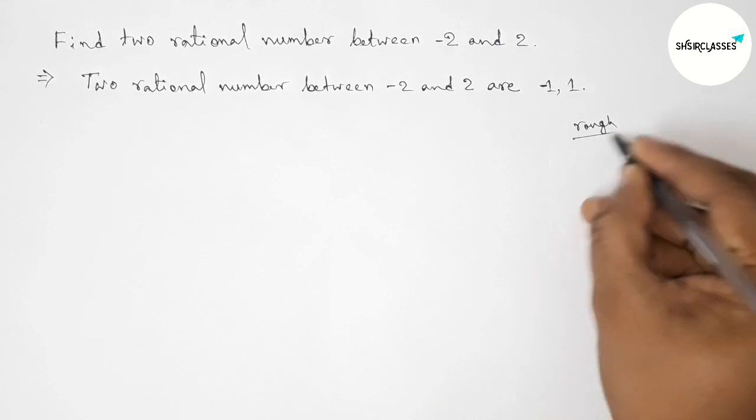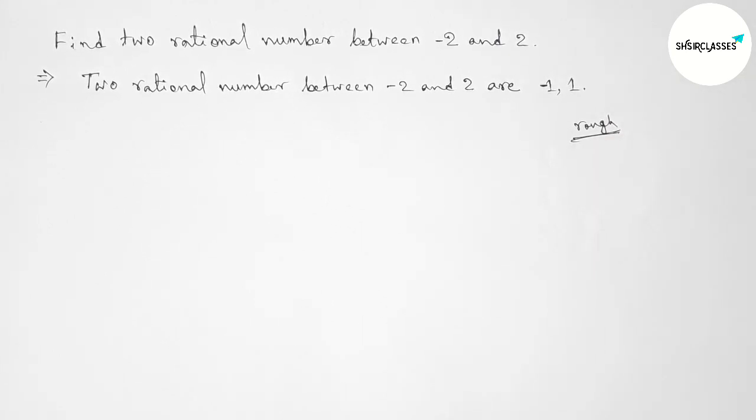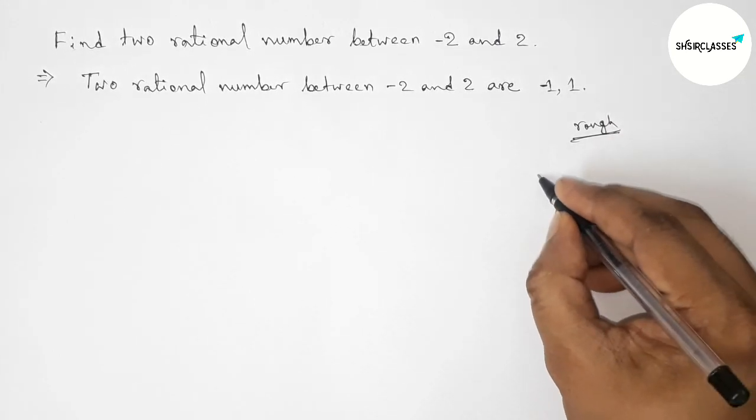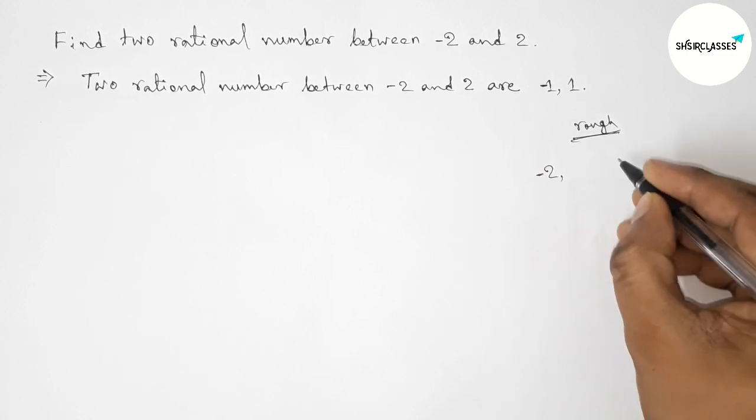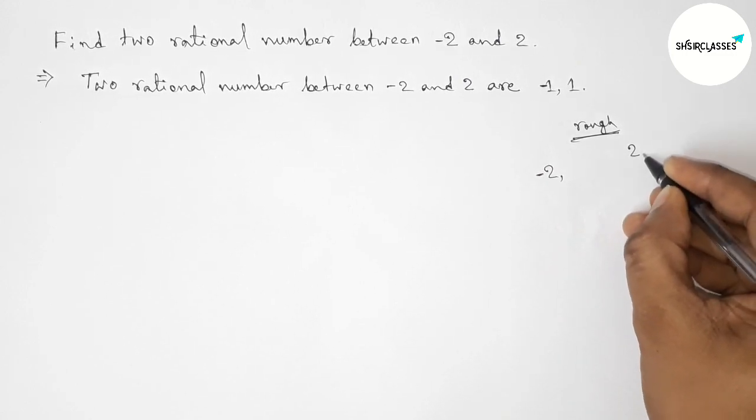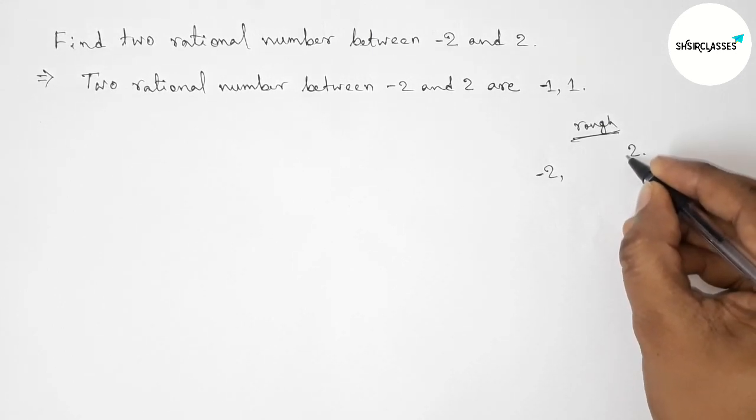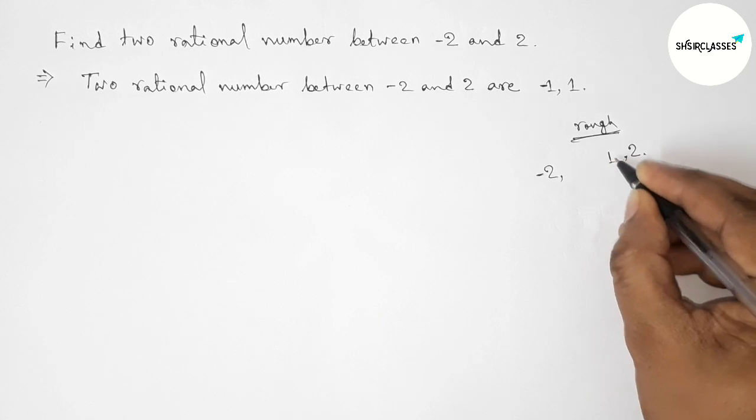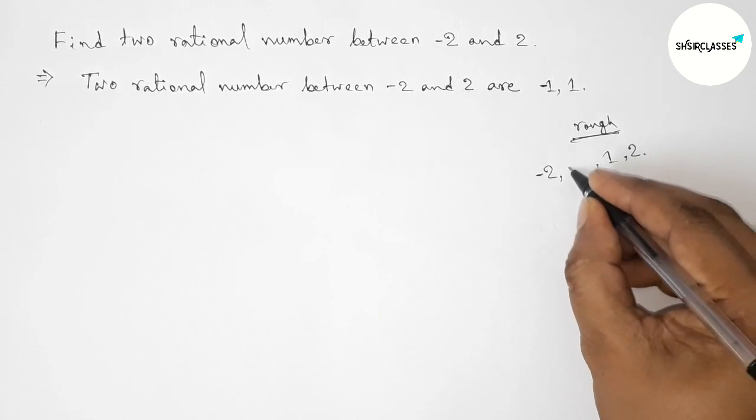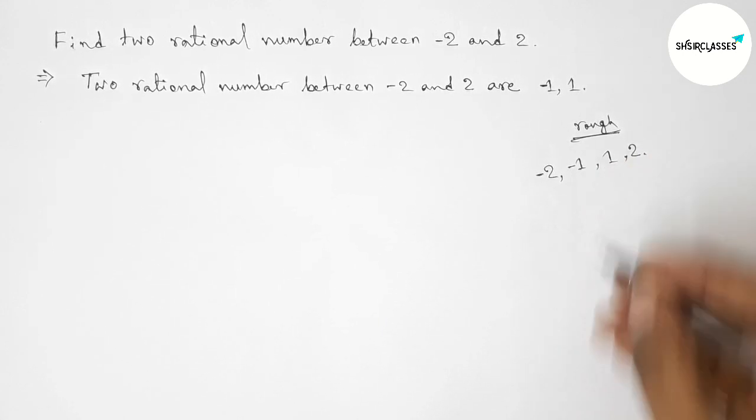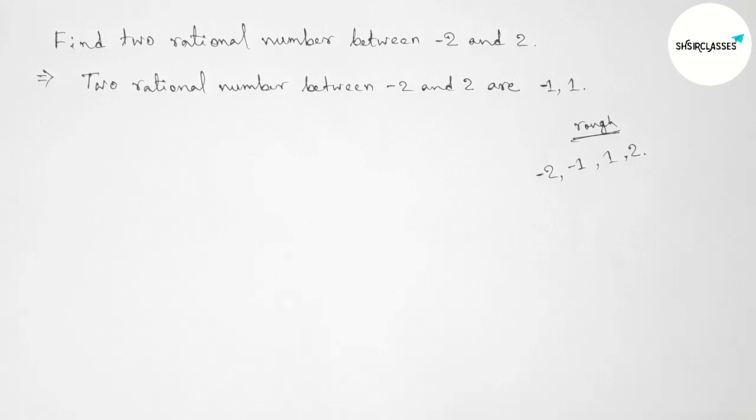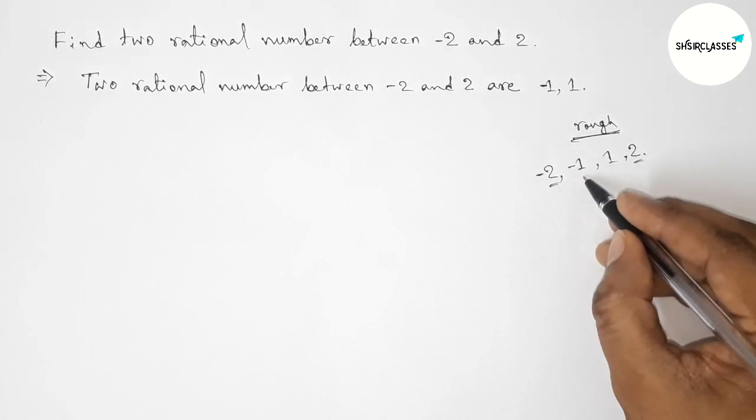Now, let's discuss this calculation. Between minus two and two, we can take many rational numbers, but here we're taking one and minus one. So minus one and one are between minus two and two - these are two rational numbers.